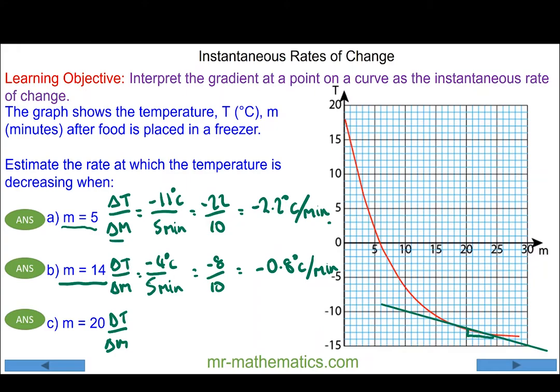You can see over a five minute period it has changed by approximately one degree, from here to about here. So that is minus one degree C over five minutes, which is minus 0.2 degrees C per minute.